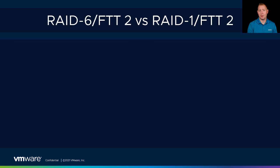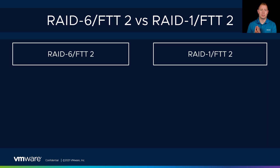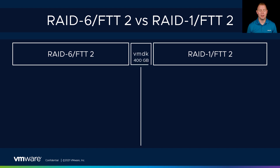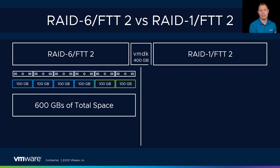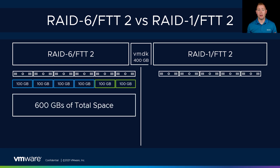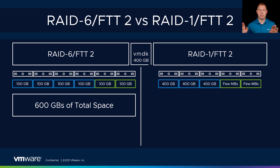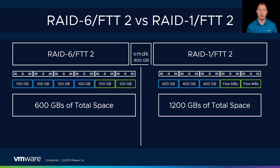For our RAID 6 policy, which is FDT of 2, versus RAID 1 FDT of 2: with a 400-gig VMDK, we've got 400 gigs for data plus 200 gigs for parity, for a total of 600 gigs. Versus our RAID 1 FDT of 2 policy, where I've got 400 gigs on three hosts — three data components for a total of 1,200 gigs, or 1.2 terabytes. Either way, that's a 50% space savings.